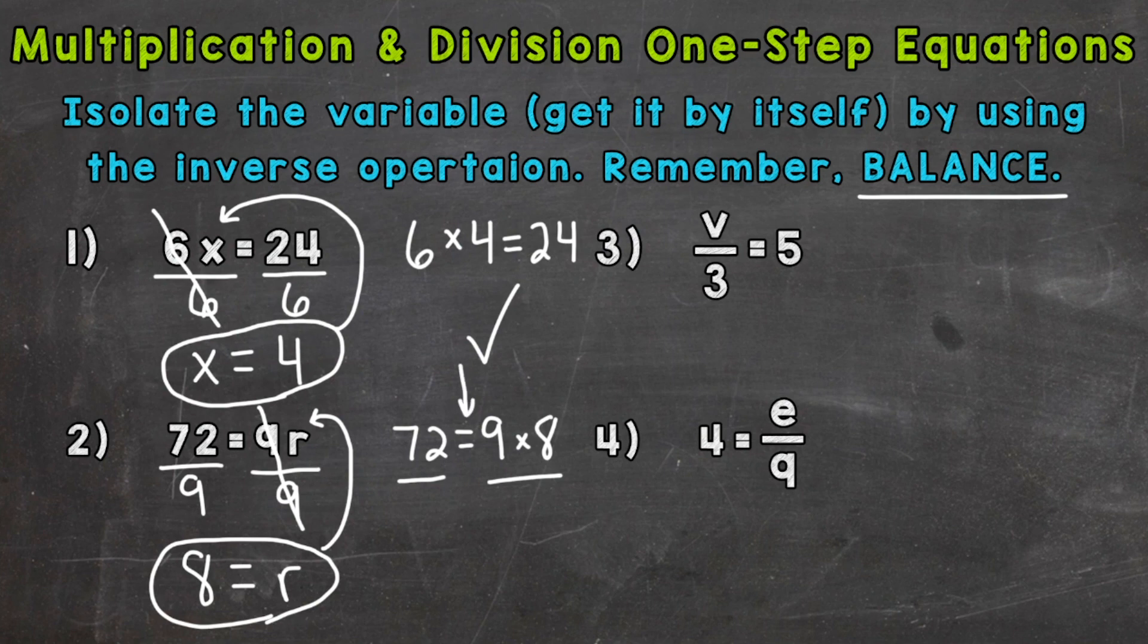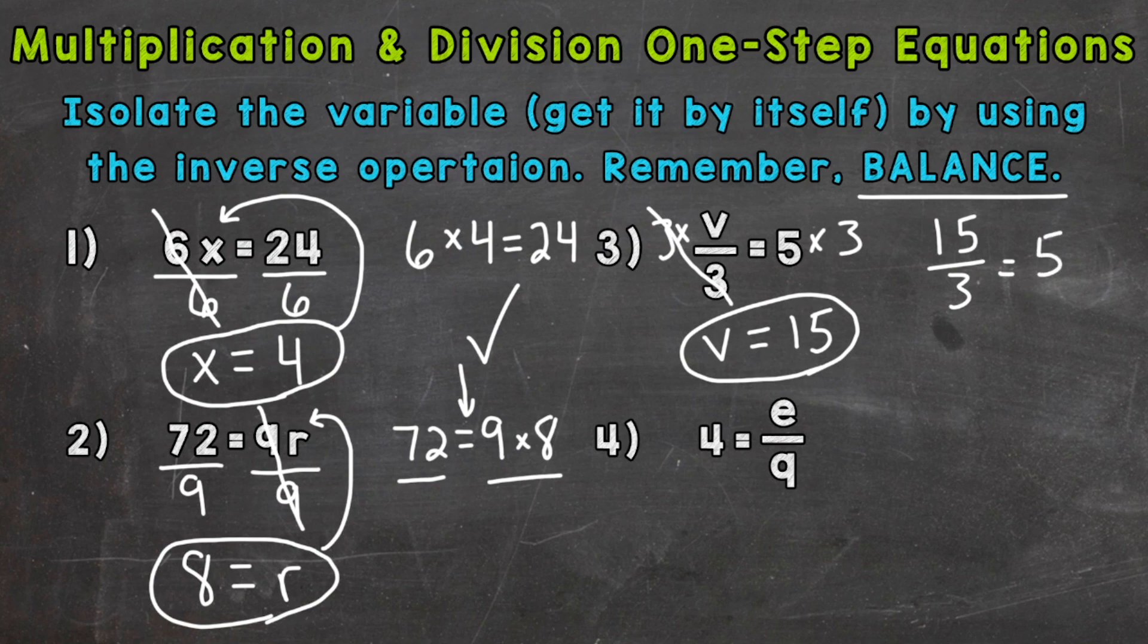Moving on to number three, we have v divided by 3 equals 5. So let's isolate the v. We are dividing it by 3. So the opposite would be to multiply it by 3. So let's multiply the left by 3 and the right by 3. So these 3s cancel out here and we isolated the v and 5 times 3 is 15. So we get v equals 15. And we can plug back in to make sure. And we are correct because 15 divided by 3 equals 5.